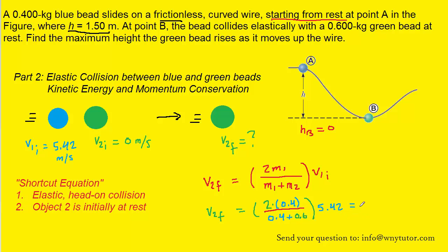After plugging in the known values, you should obtain approximately 4.34 meters per second, and that will represent again the final speed of object two, which is the green bead.